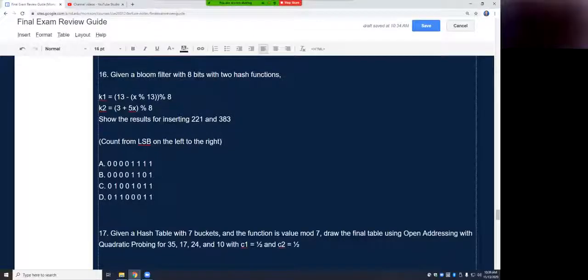Problem 16 states, given a bloom filter with 8 bits with two hash functions, where k1, we have x mod 13, and that value is subtracted from 13, and that whole quantity is modded by 8, and then k2, we have 3 plus 5x mod 8.